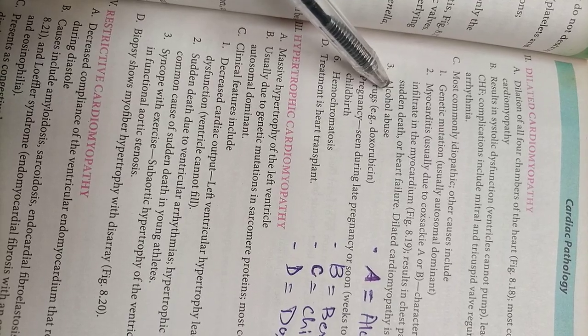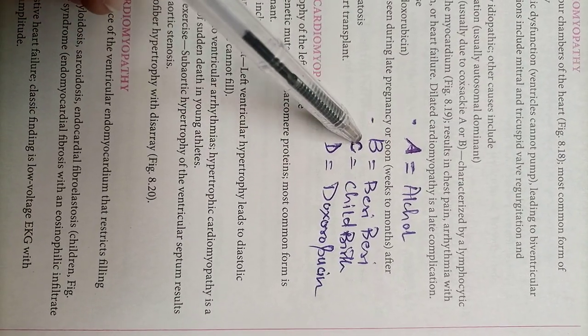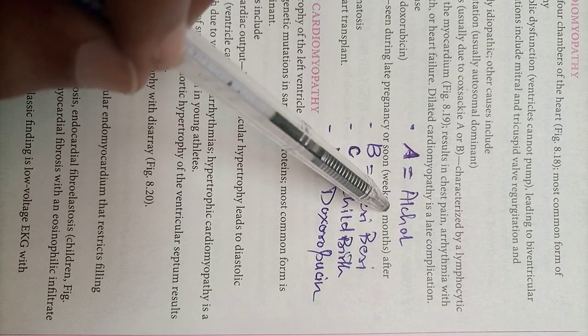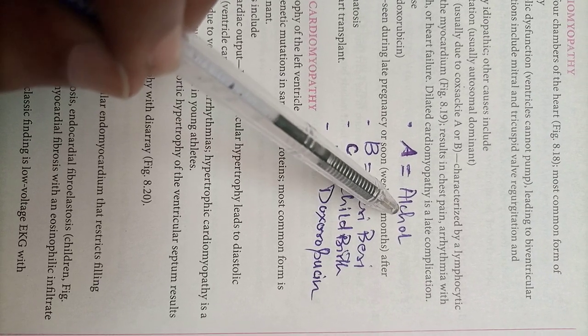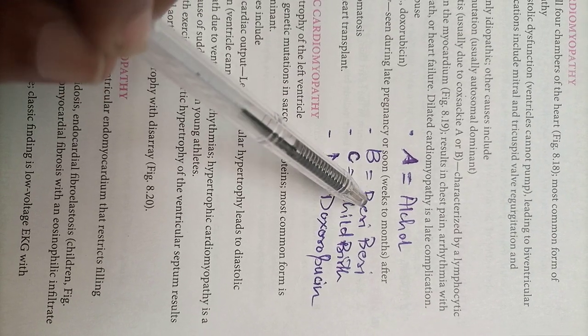Now the mnemonic for dilated cardiomyopathy is ABCD. A stands for alcohol, those patients who consume a lot of alcohol can result into dilated cardiomyopathy. B stands for beriberi, a thiamine deficiency.